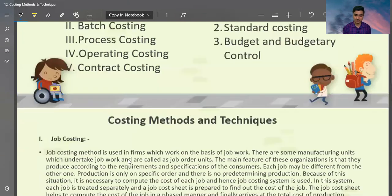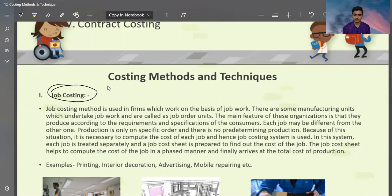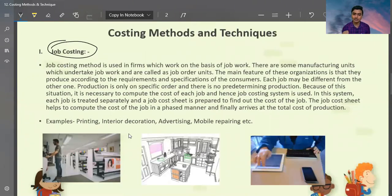First of all, we will discuss methods of costing. There are some manufacturing units which undertake job work and are called job order units. The main feature of this organization is that they produce according to requirement and specification. This point is very important: produce according to requirement and specification. Every consumer has a specific requirement or a specific specification. In that regard, this is produce.